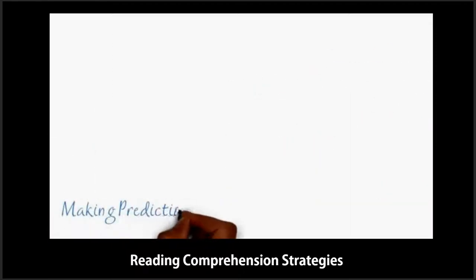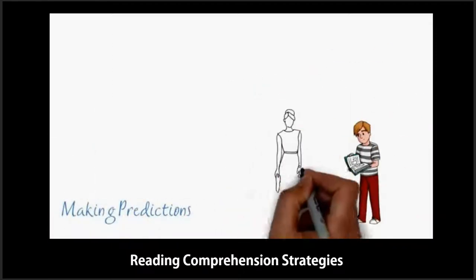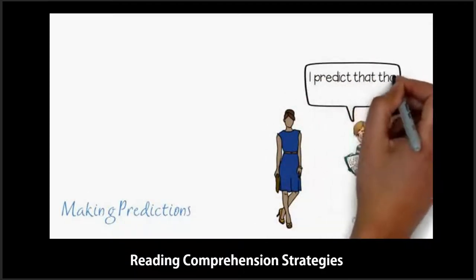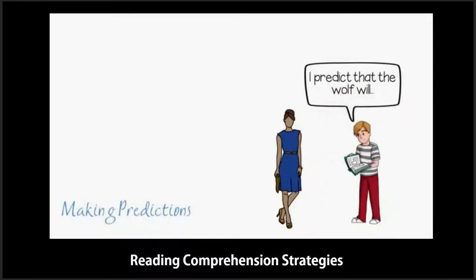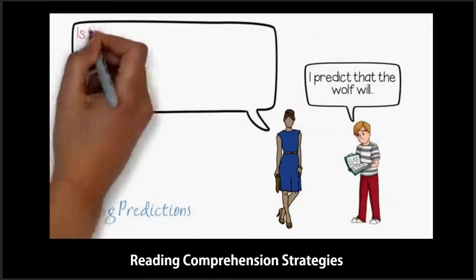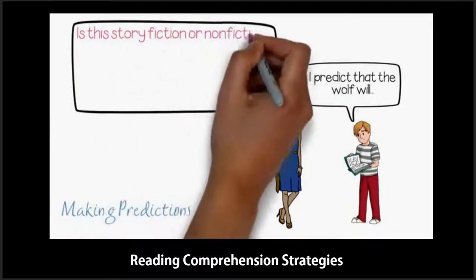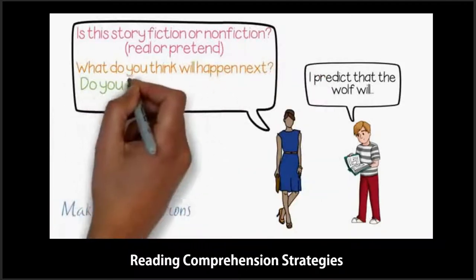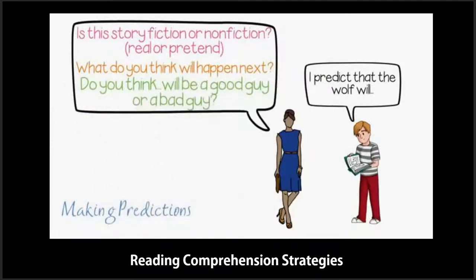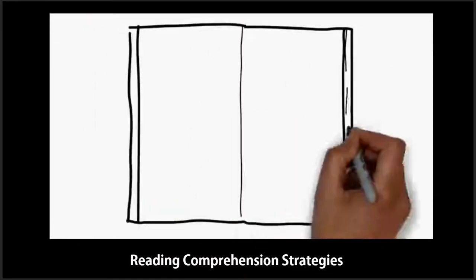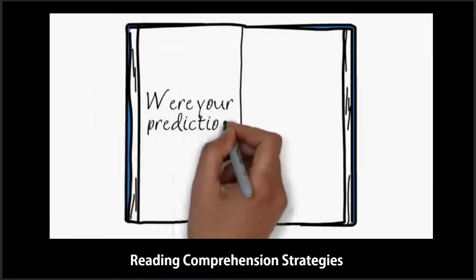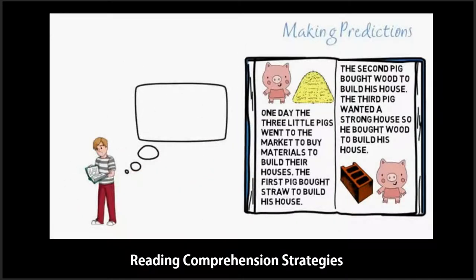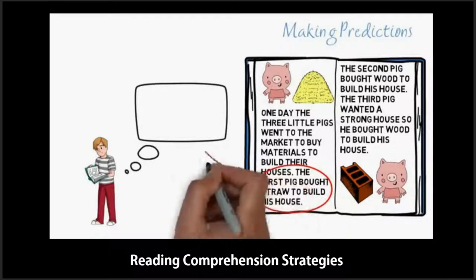Making predictions about what will happen next in a story can help keep readers interested in the text. It can be fun to check their predictions as the text unfolds. You can help a reader make predictions by asking questions like: Is this story fiction or non-fiction — real or pretend for very young students? What do you think will happen next? Do you think the wolf will be a good guy or a bad guy in the end? It can be fun for you and your student to jot down your predictions in a journal, and at the end you can check to see if your predictions were correct.